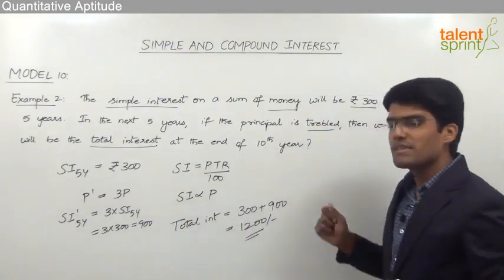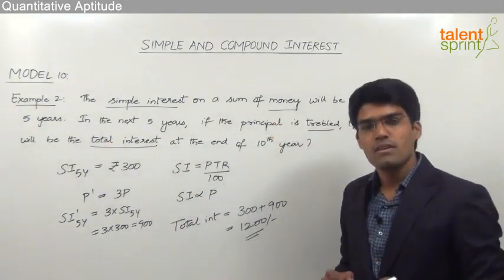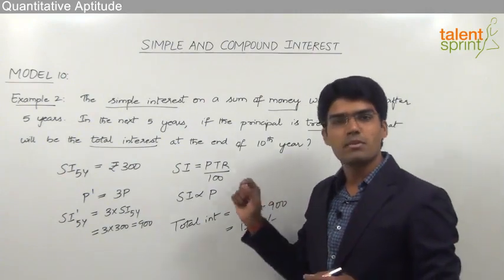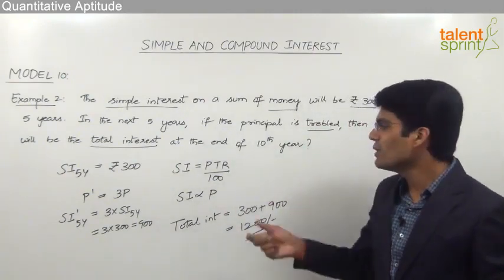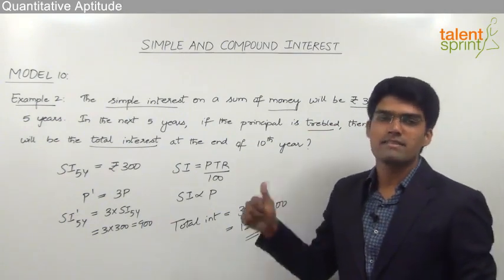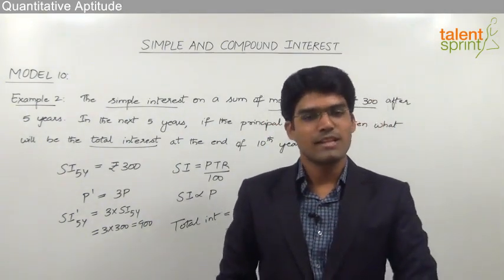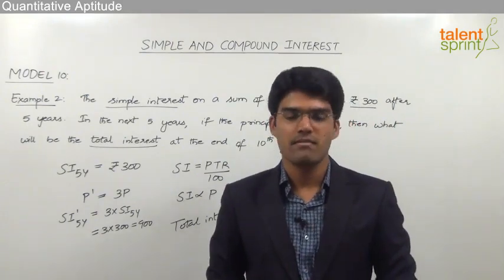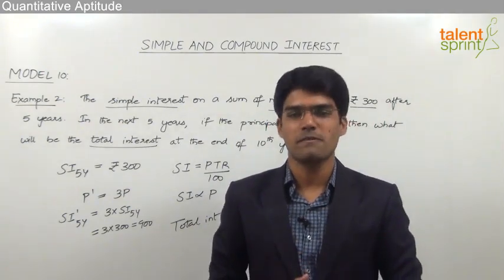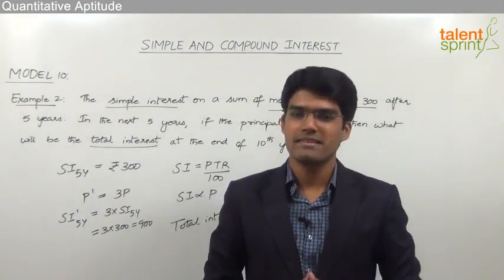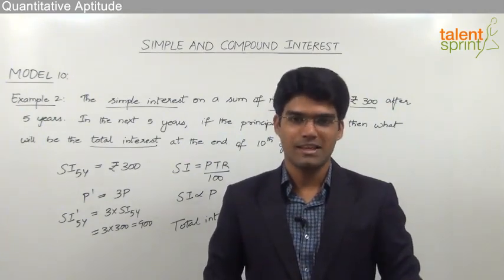This is how this question can be simply answered by recognizing that simple interest is directly proportional to principal, time, and rate of interest — so as any of these three increases or decreases, the simple interest also increases or decreases proportionately. That is all from this topic of simple interest and compound interest. As you have seen, we can use the concept of percentages to get answers in a smart way. Practice well on these questions. See you in the next session. Thank you.